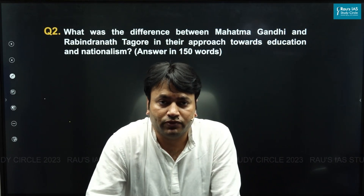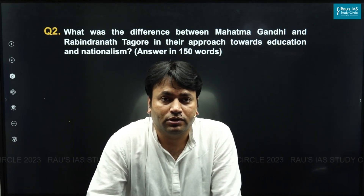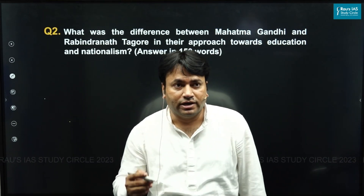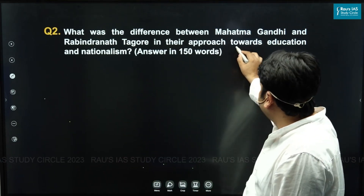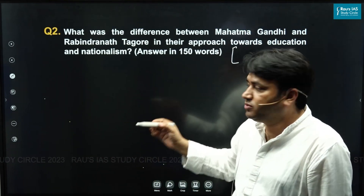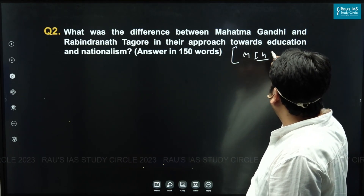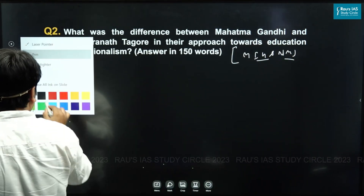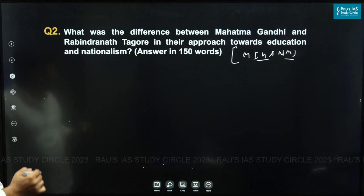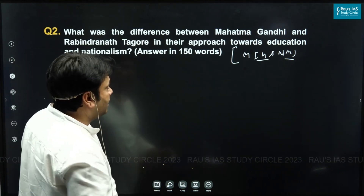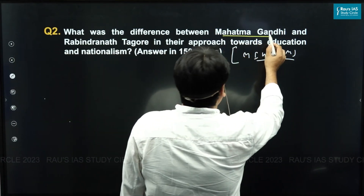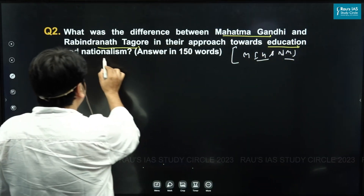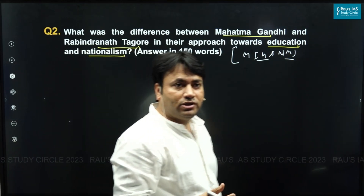Hello students. In this video I am going to discuss an important question from G.A. Spence paper 1, related to Indian history — specifically modern Indian history and national movement. The question asks: what was the difference between Mahatma Gandhi and Rabindranath Tagore in their approach towards education and nationalism?